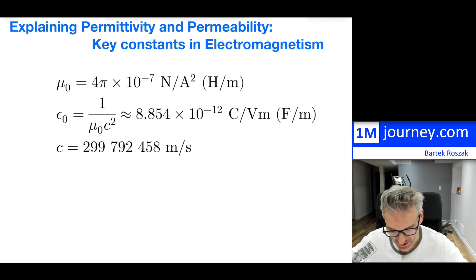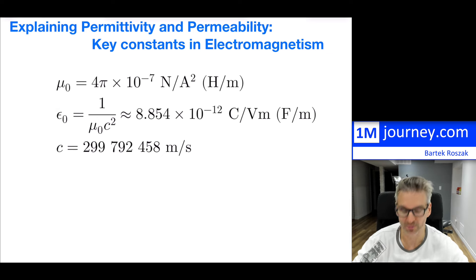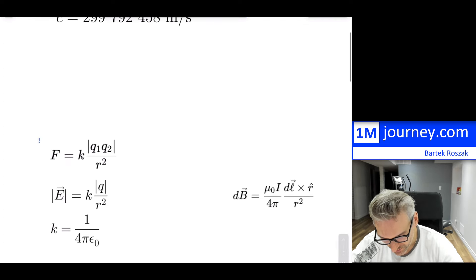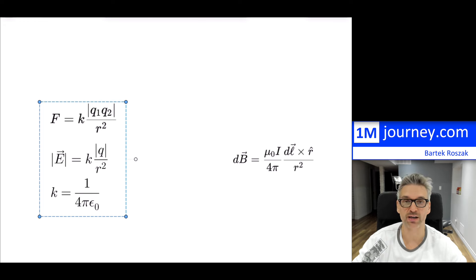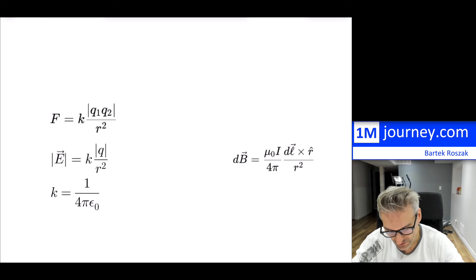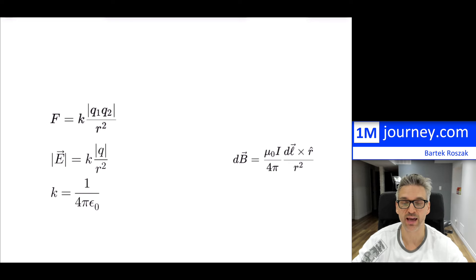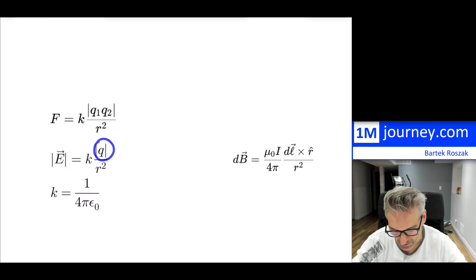So let's dive in and start with the permittivity constant. What in the world is this permittivity constant? You may recall this — it looks kind of like Coulomb's law. You have two charges, q₁ and q₂, your radius — how far they're apart — and then this constant k. You can also find and define the electric field magnitude from just the charge, which gives you the strength of an electric field at a certain distance away from the charge itself.